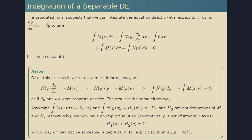For example, if you had something like e to the y plus sine y plus x squared equals c, it would not be possible to solve for y and get it explicitly in terms of x.